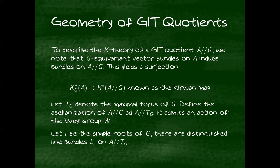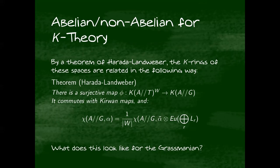There's a relation between the K-theory of your GIT quotient and the K-theory of its abelianization. If you take the Weyl invariants of the K-theory of A mod T, it surjects onto the K-theory of A mod G with prescribed kernel. This surjection respects integration. If you integrate something on A mod G, it's the same as integrating some preimage on A mod T, divided by the order of the Weyl group. You add this Euler class of the direct sum of the root line bundles.